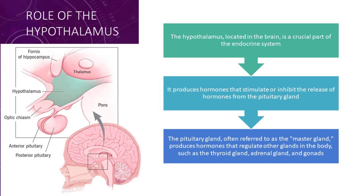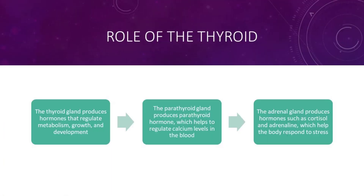Role of the hypothalamus. The hypothalamus, located in the brain, is a crucial part of the endocrine system. It produces hormones that stimulate or inhibit the release of hormones from the pituitary gland. The pituitary gland, often referred to as the master gland, produces hormones that regulate other glands in the body such as the thyroid gland, adrenal gland, and gonads.